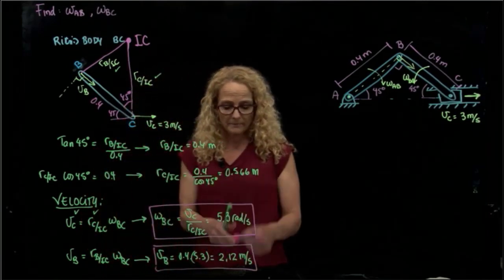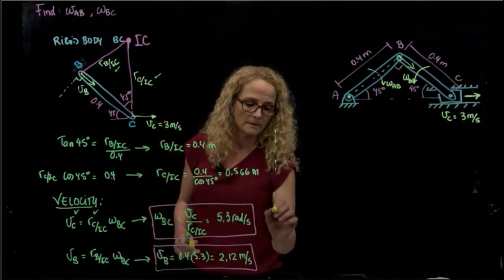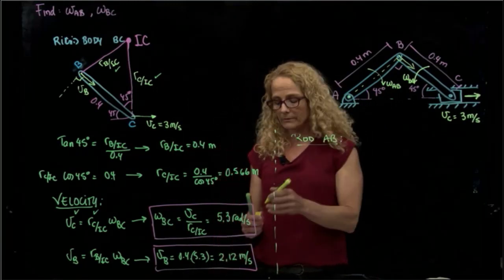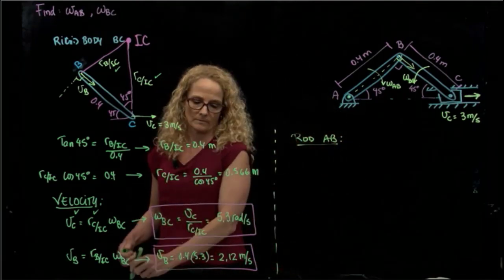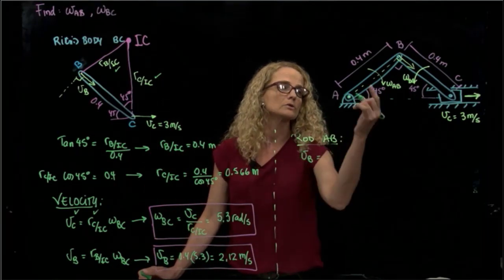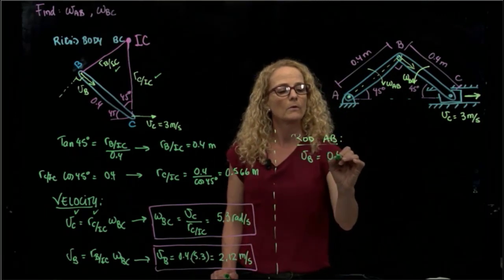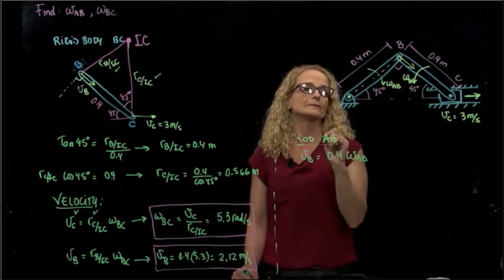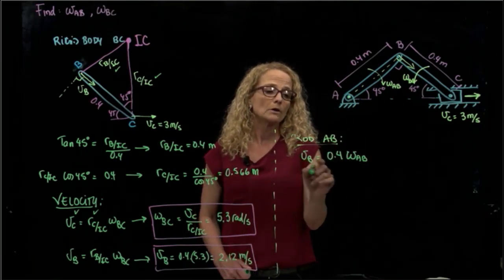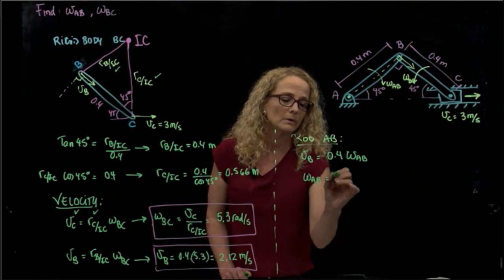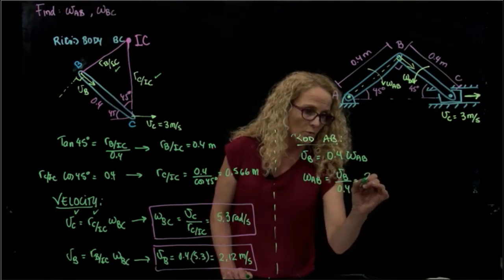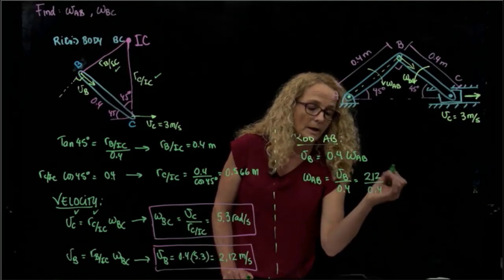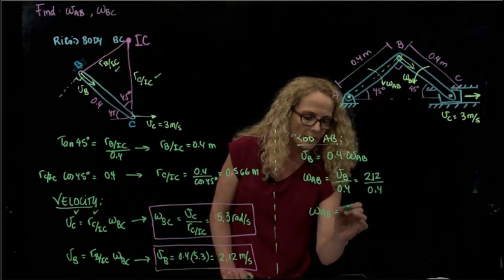Now, having the velocity of B, I will analyze rod AB. For rod AB, A is the instant center of rotation. The velocity of B equals 0.4 times the angular velocity of AB. So the angular velocity of AB equals the velocity of B over 0.4, which is 2.12 divided by 0.4. That gives the angular velocity of AB equal to 5.3 radians per second.